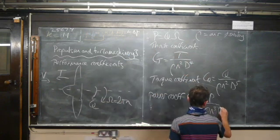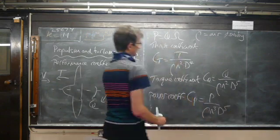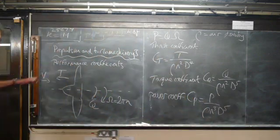Power coefficient, non-dimensional power CP is P over rho n cubed D to the 5th. I don't need this diagram anymore.